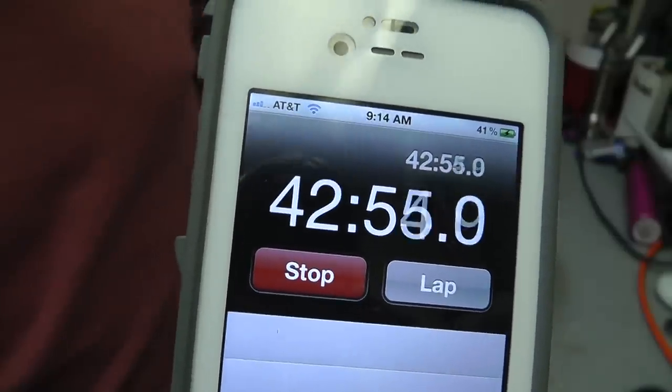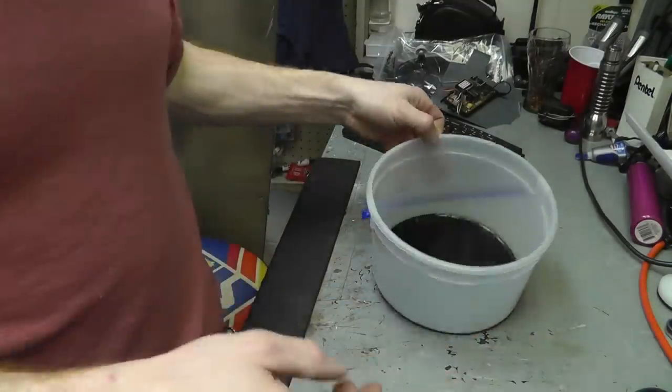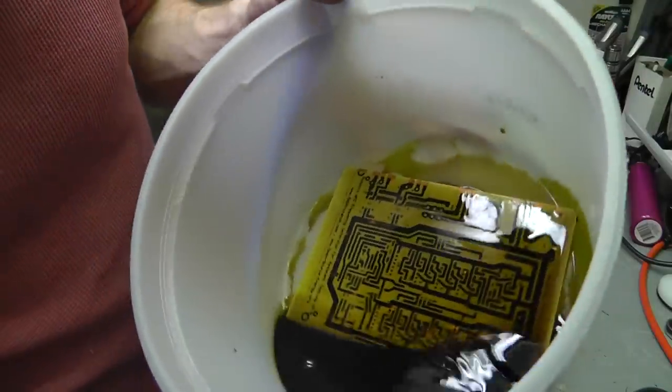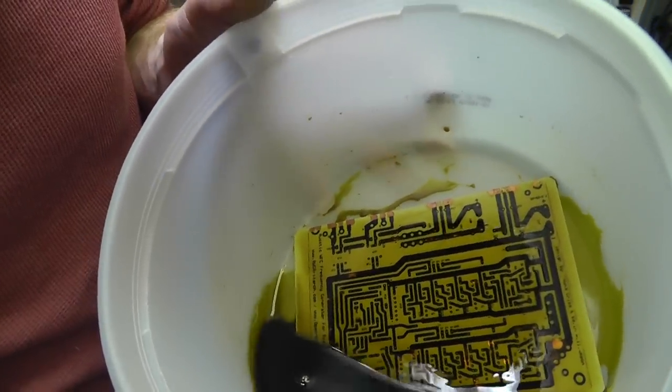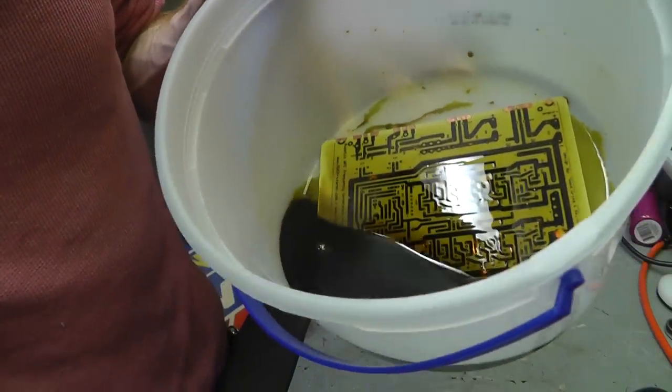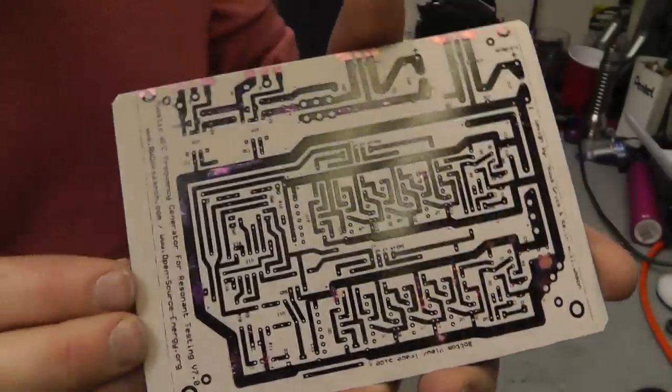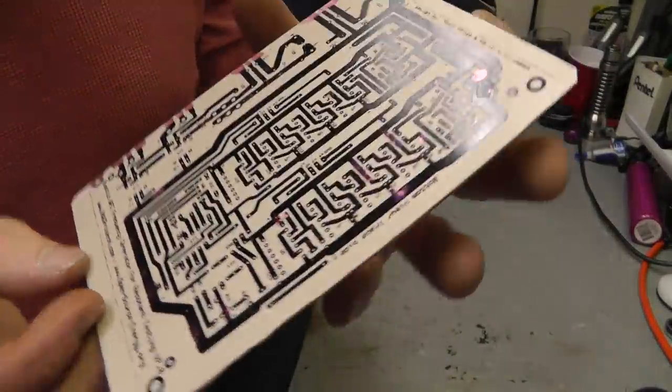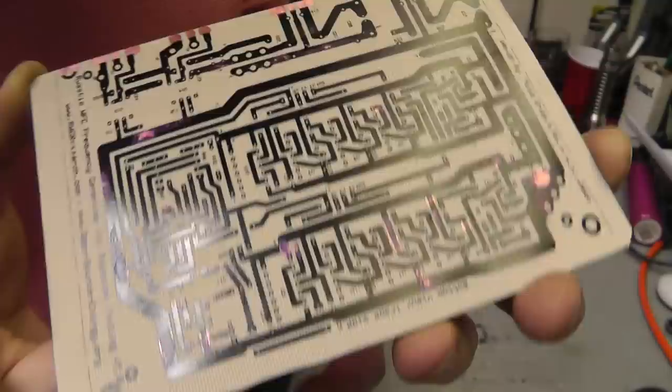43 minutes and looks like we're done. Looks really good to me so I'm going to actually take this and rinse it off and show you what it looks like. And there you go. So went from copper clad board to etched circuit board. Really not that much work.